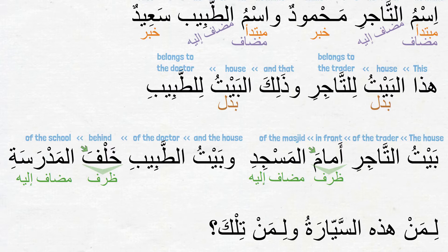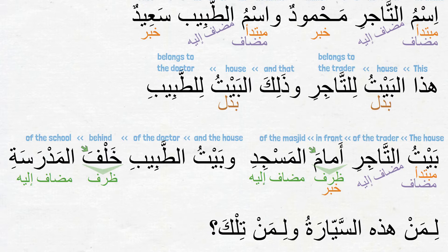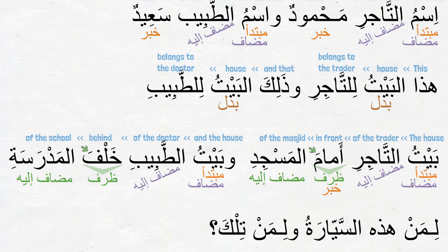Now, can you identify the مبتدأ of the first ismiya sentence here? بيت is the مبتدأ وهو مضاف, and التاجر is the مضاف إليه. How about the خبر? The خبر here is the ism أمام. We call this خبر to be خبر شبه جملة because it is ظرف. And المسجد is the مضاف إليه. The structure of the second ismiya sentence is the same as the first.